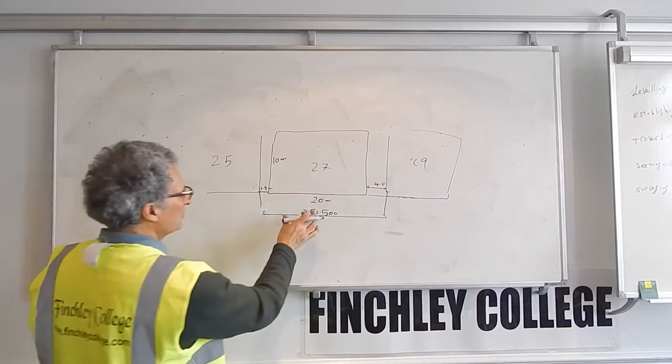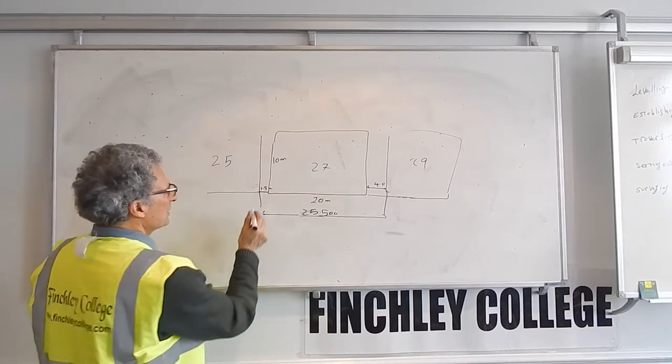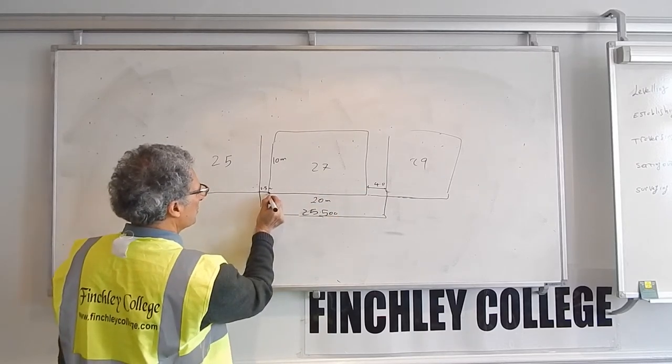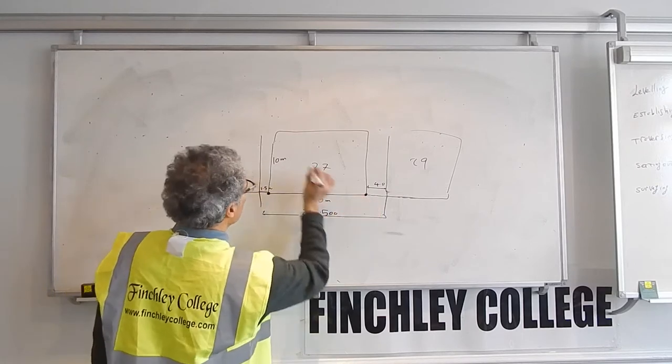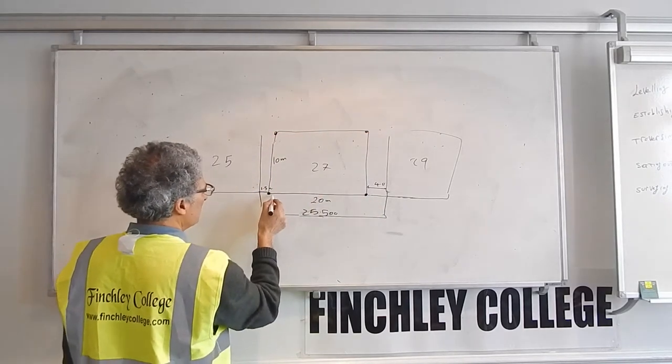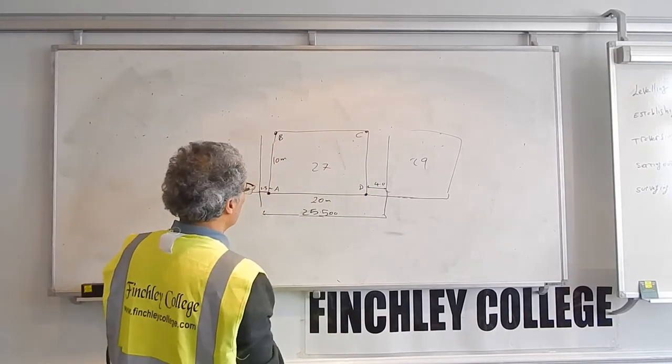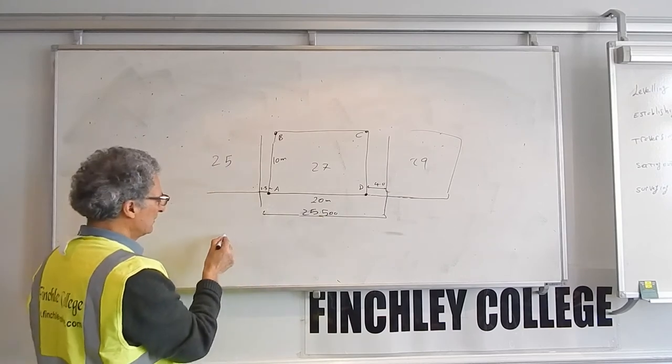So let's assume you've done it, and the distances are correct. Now what you do, the first thing you do, you establish a coordinate system for your own building. So for this one, let's say I call it point A, point B, point C, and point D. So I establish a coordinate system.